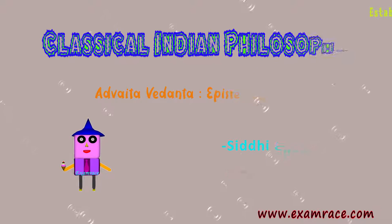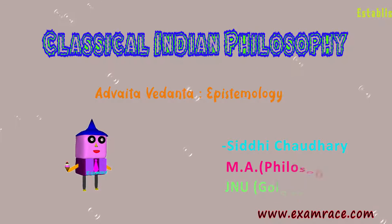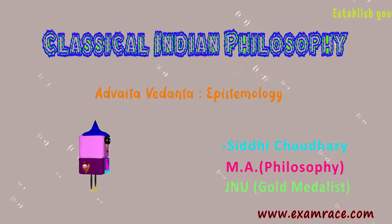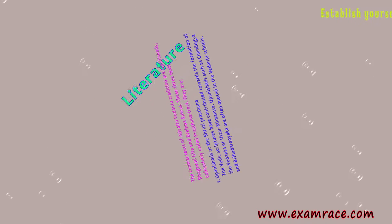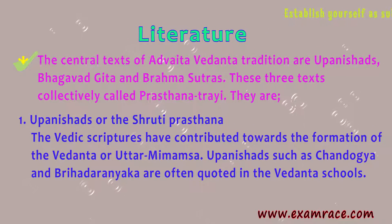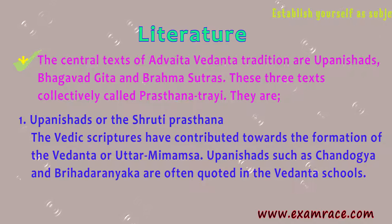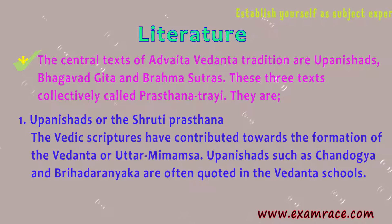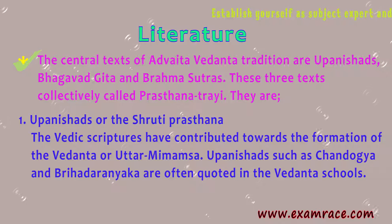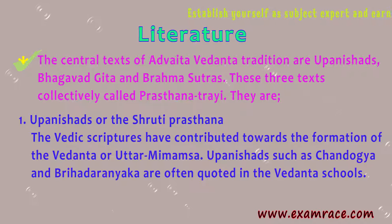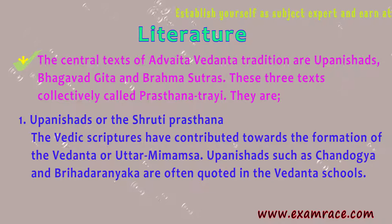Classical Indian Philosophy: Advaita Vedanta Epistemology. The central texts of the Advaita Vedanta tradition are the Upanishads, Bhagavad Gita, and Brahma Sutra. These three texts collectively are called Prasthana Trayae.